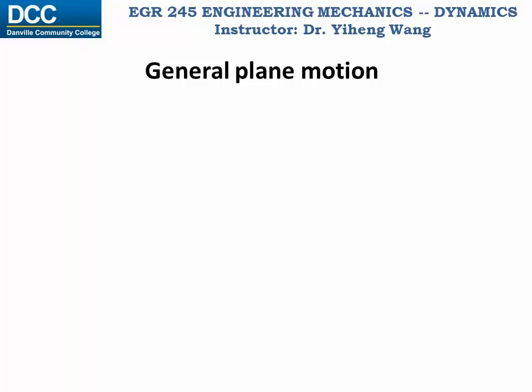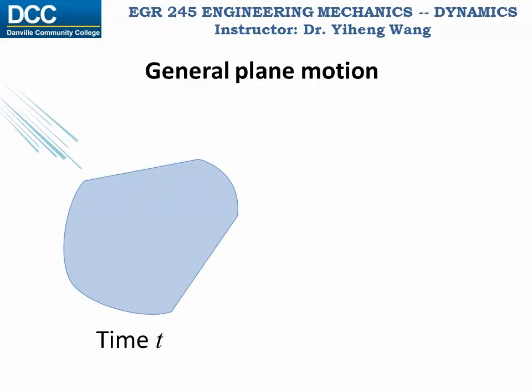Let's imagine at an arbitrary time t, an object has moved from somewhere to its current location with the current orientation. After a very short time period dt, it has moved to a new location with a new orientation. This object has both translated and rotated within this plane, and the combination of both translation and rotation is known as general plane motion.